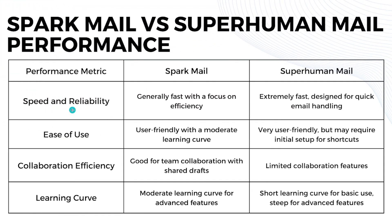When we talk about speed and reliability, Sparkmail is generally fast with a focus on efficiency, while Superhuman Email is extremely fast and mainly designed for quick email handling. For ease of use, Sparkmail is user-friendly with a moderate learning curve, while Superhuman Email is very user-friendly but requires initial setup for shortcuts.